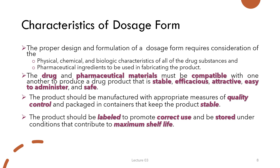The proper design and formulation of a dosage form requires consideration of the physical, chemical, and biological characteristics of all drug substances and pharmaceutical ingredients used in fabricating the product. The drug and pharmaceutical materials must be compatible with one another to produce a product that is stable, efficacious, attractive, easy to administer, and safe. The product should be manufactured with appropriate quality control measures and packaged in containers that keep the product stable throughout its shelf life, and labeled to promote correct use.